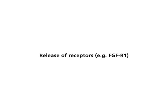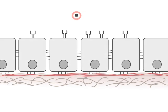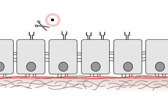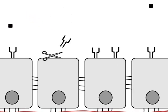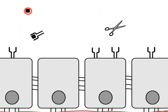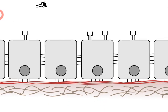Release of receptors, for example, FGF receptor 1. Growth factor receptors which are released from the cell membrane can no longer signal. They may act as traps for growth factors.